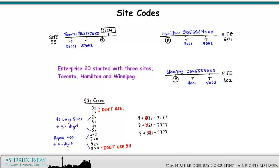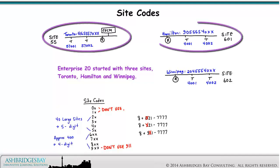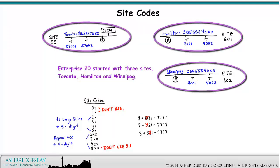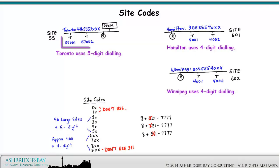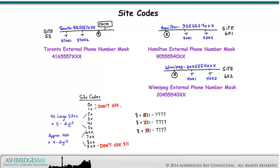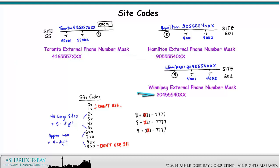Enterprise 20 started with three sites: Toronto, Hamilton, and Winnipeg. Toronto uses five-digit dialing, and Hamilton and Winnipeg use four digits. The external phone number mask at Toronto is 416-555-7XX, at Hamilton 905-555-40XX, and at Winnipeg 204-555-40XX.